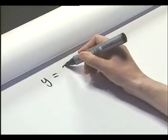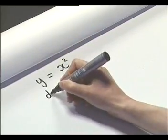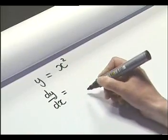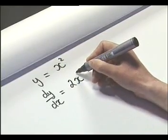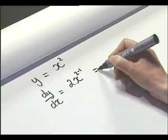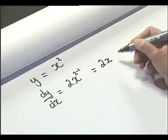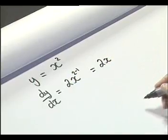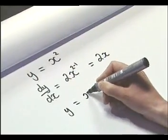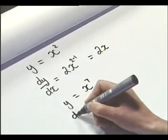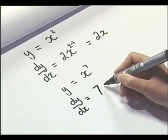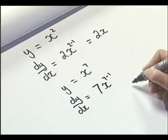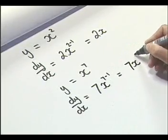Let's have a look at some examples. Let's say y equals x squared. So our dy by dx equals — the power comes down in front, so it's 2 times x to the power of 2 take away 1, which gives us 2 times x to the power of 1, which is just 2x. For y equals x to the power 7, dy by dx equals 7 times x to the power of 7 minus 1, so we get 7x to the power of 6.